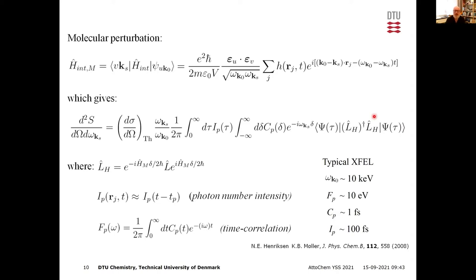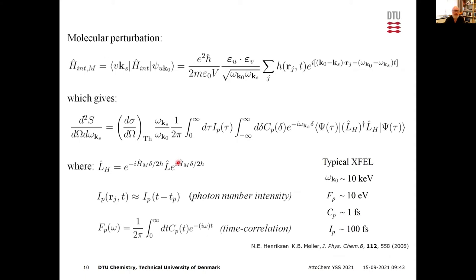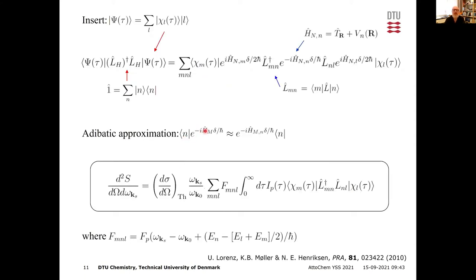Now let's manipulate the expression further. We plug in the Born–Oppenheimer expansion of the molecular wave packet — expanding on each electronic state with its nuclear wave packet amplitude — and insert the electronic identity. I use the adiabatic approximation: since the coherence time is only about 1 femtosecond, everything is adiabatic on that timescale. The molecular Hamiltonian for the nuclei on a given electronic state then acts on the nuclear wave packet.